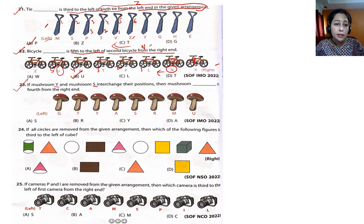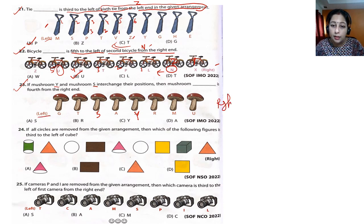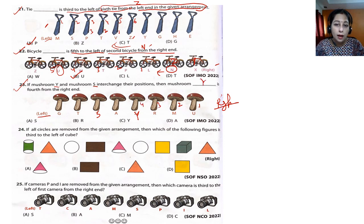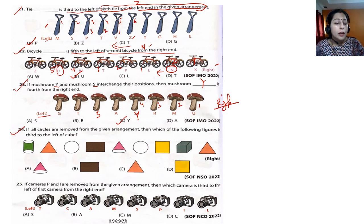Question 23: if mushroom Y and S are interchanged — Y becomes S and S becomes Y — then which mushroom is fourth from the right end? This is the left, so this is the right. Fourth from the right: one, two, three, four — Y is the answer. Option C is correct.